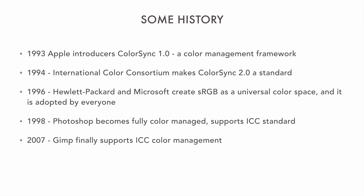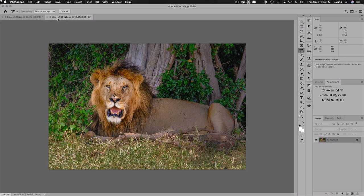In 2007, GIMP — the Linux kind of version of Photoshop — finally supported the ICC color management standard. And now in 2020, people still don't understand color management, as we could see when looking at Photoshop. There are still issues where people don't understand why color might not match.